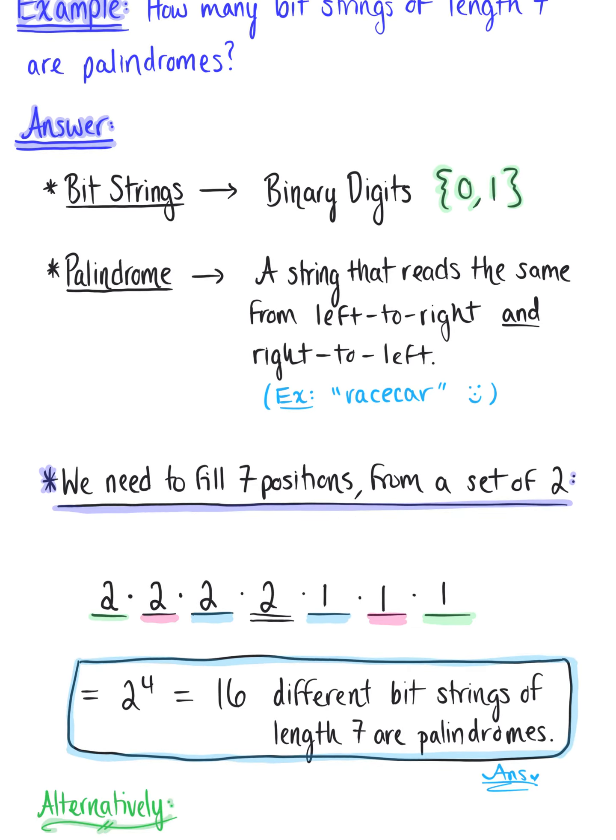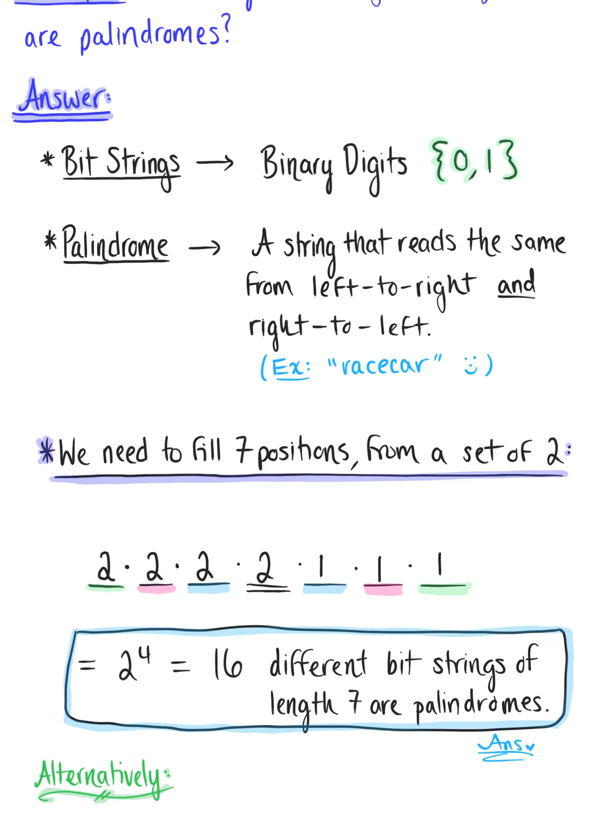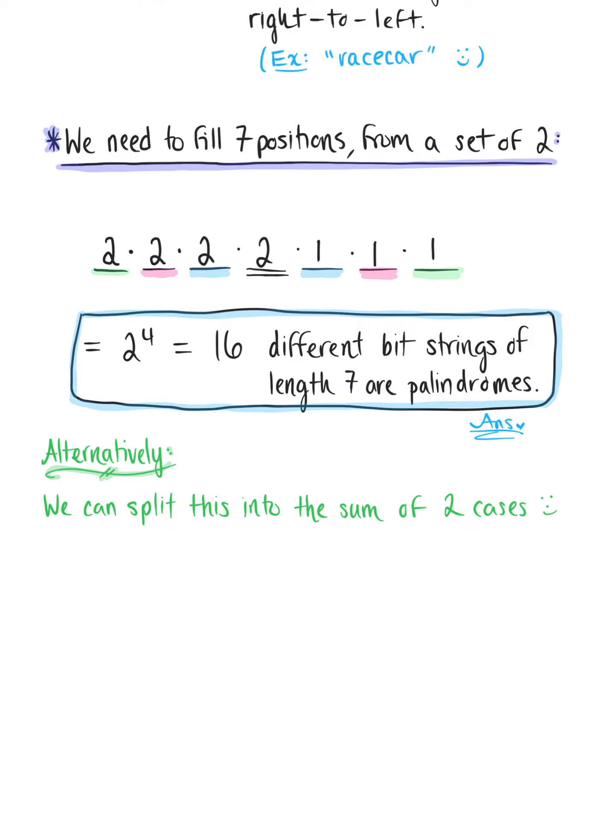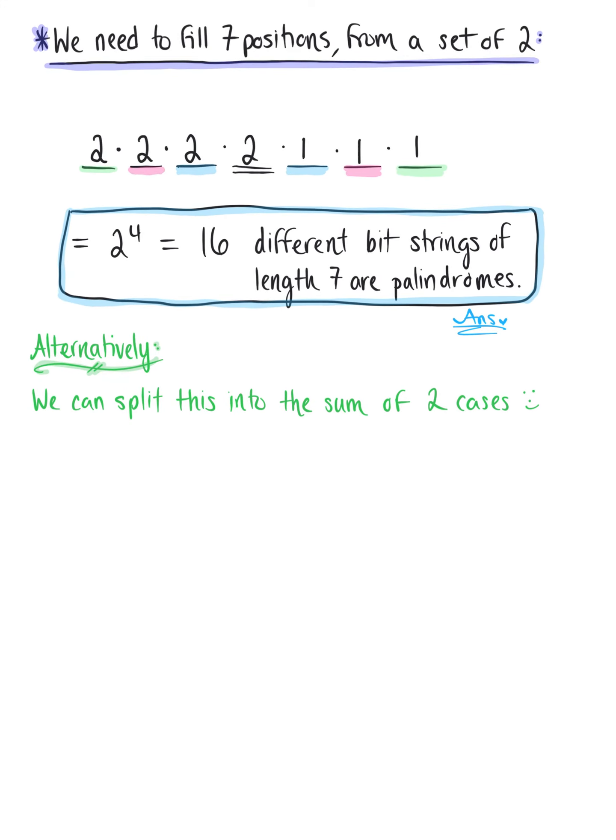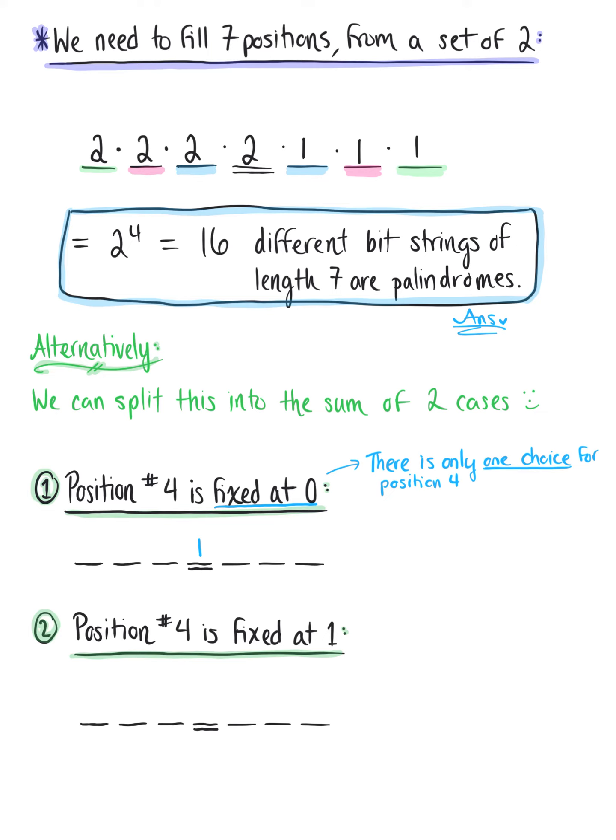Now alternatively, we could think about this by splitting the bit strings into the sum of two different cases. The first case would be when position number four is fixed at a zero, and the second case is when position number four is fixed at a one. In both of these cases, the first three bits must match the last three bits.